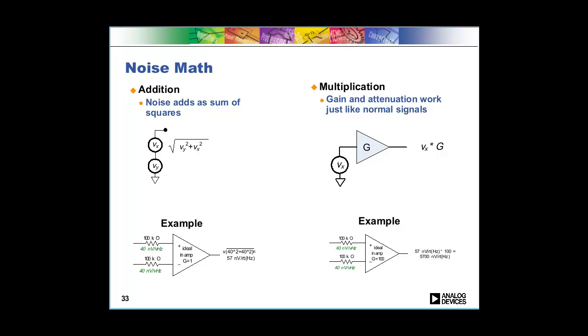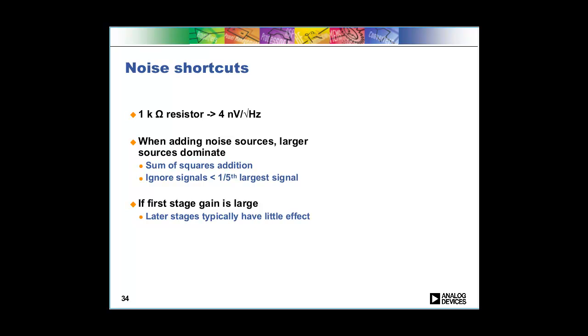The other thing you'll typically be doing with noise signals is you'll be gaining them up or occasionally attenuating them, and that works just like standard math—you just multiply or divide by the gain or attenuation. We took our signal from our last example and instead of using a gain of one in-amp, we used a gain of 100 and you see that it's 100 times more.